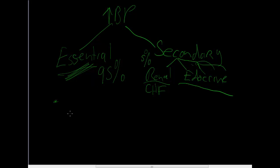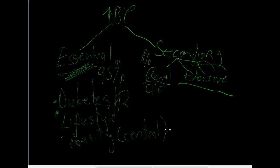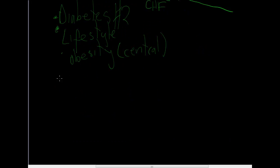There's risk factors for having essential. The big ones that you can change: diabetes type 2, they're modifiable in the sense that you can avoid them. Lifestyle, so that's if you're inactive. Obesity, specifically central, so that's a big waist, a big belly, in that sort of area. Smoking.